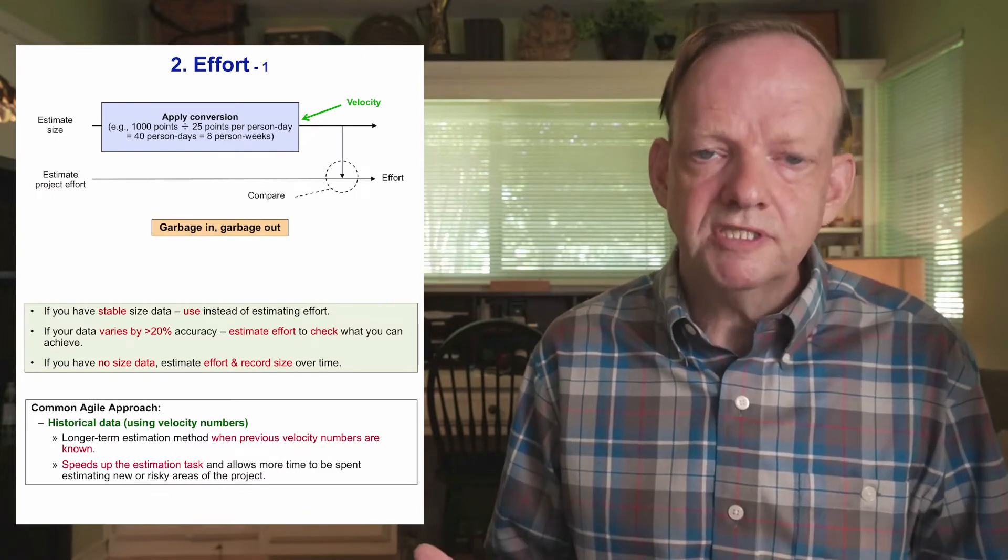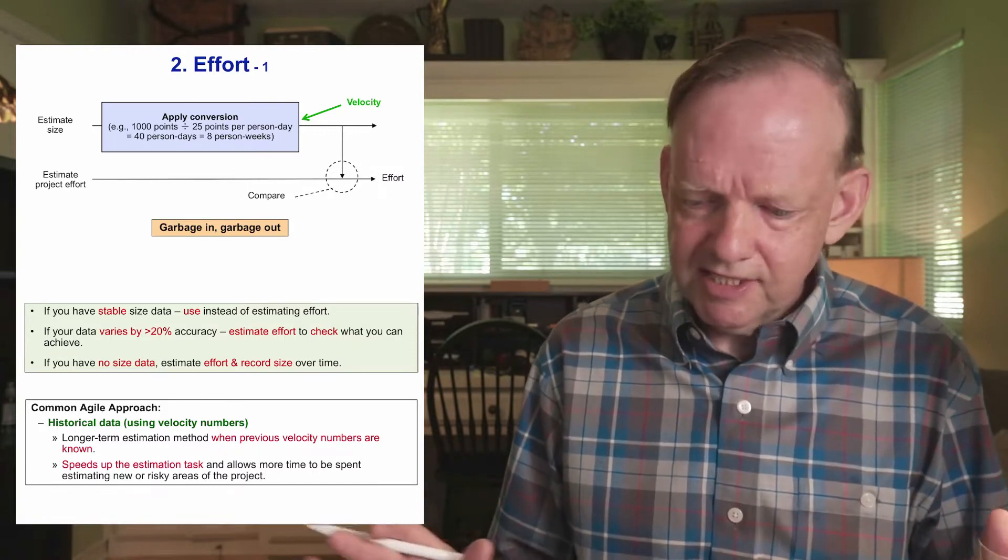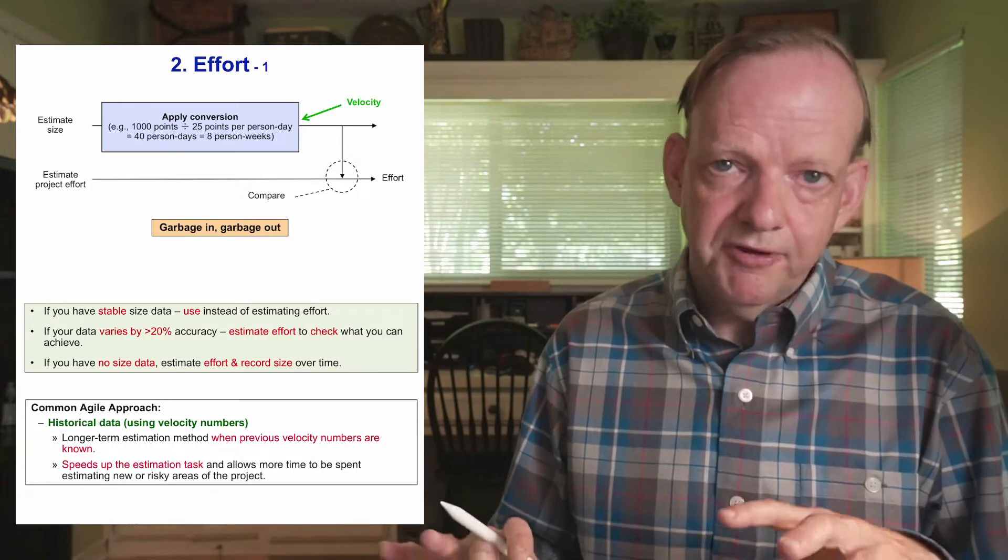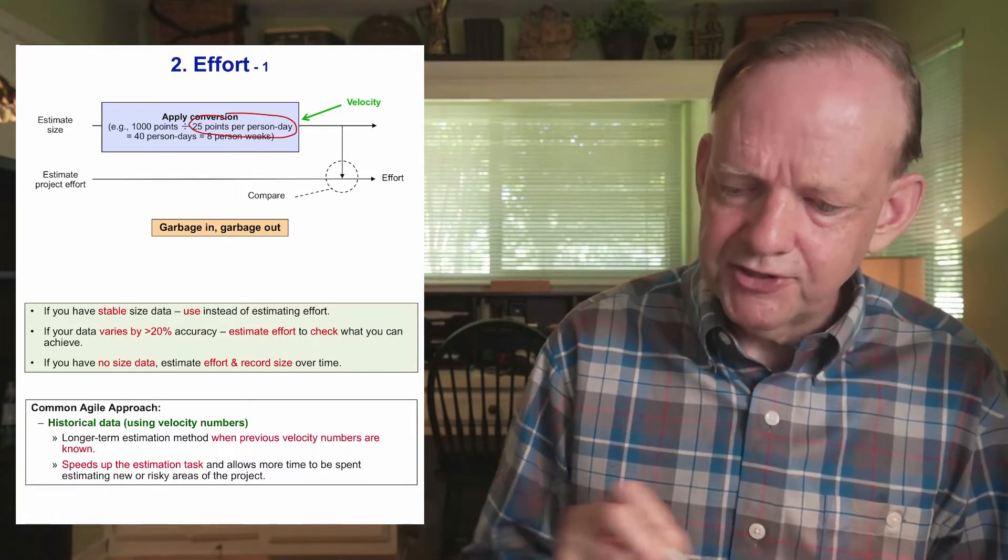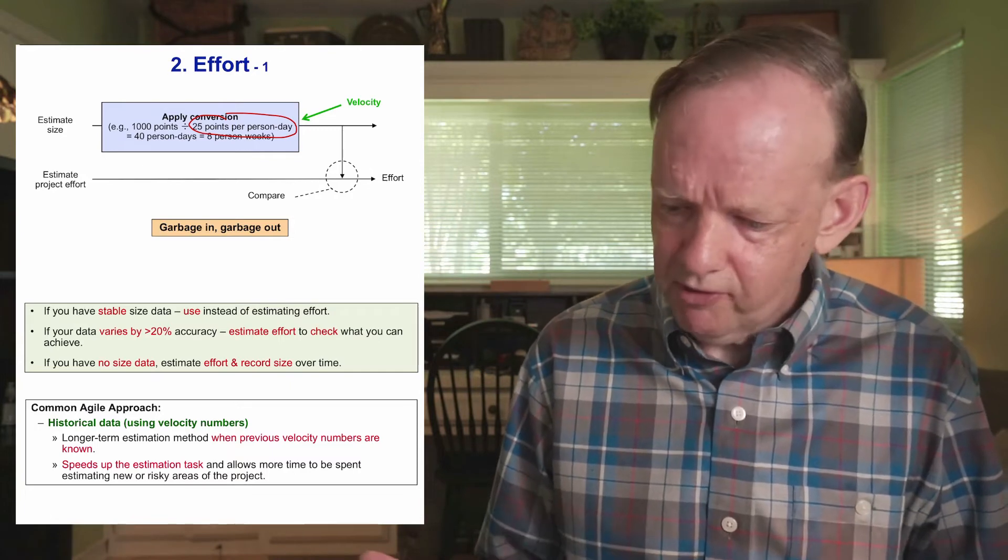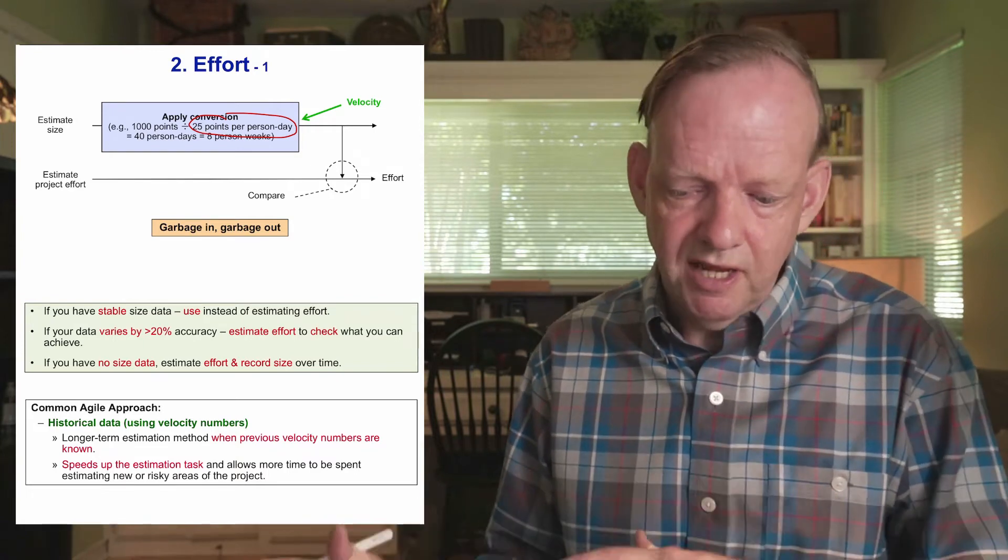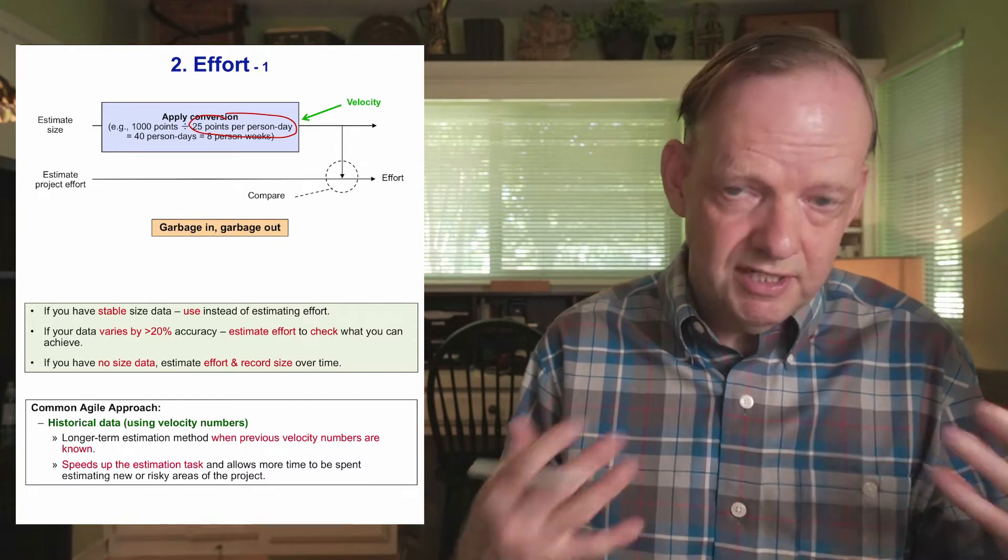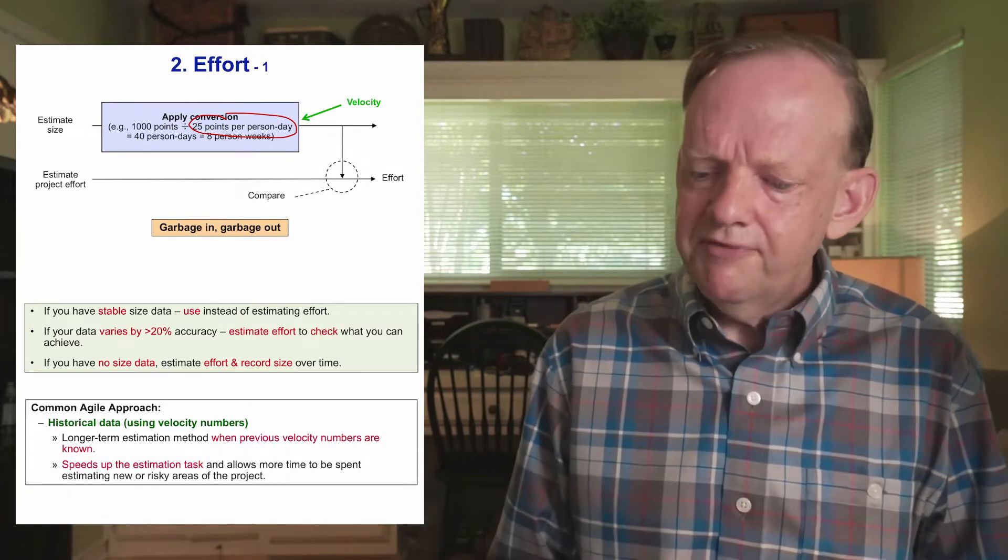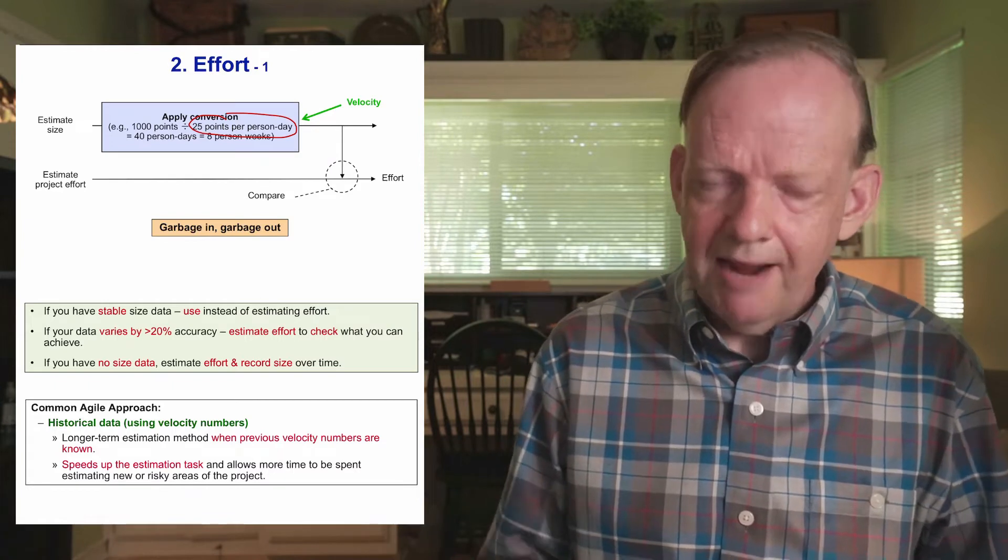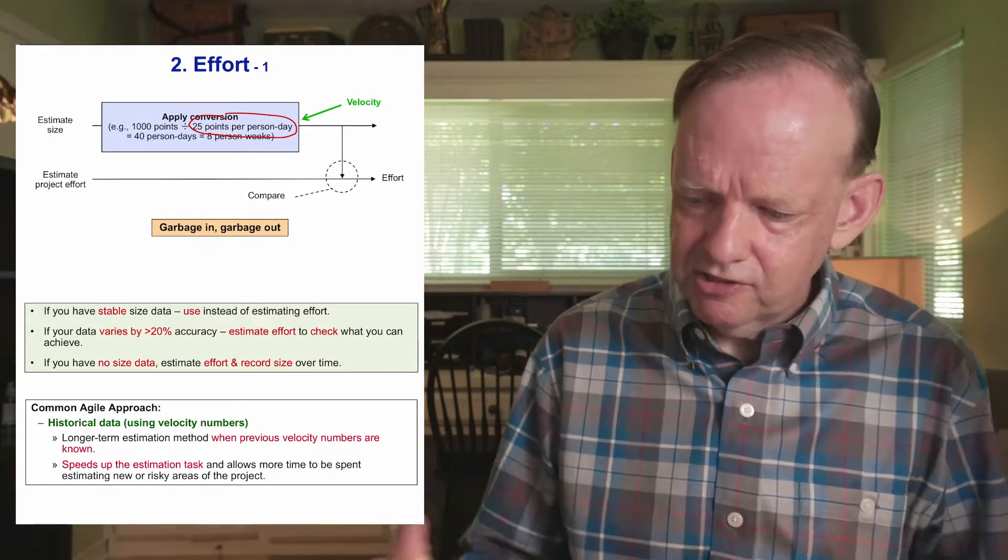The next step is to derive effort. Effort would mean billable hours or labor or uninterrupted effort or ideal time. The idea of starting with a Fibonacci series or story point series and then a velocity is you can take the velocity and figure out the likely duration. If we had a project or backlog of a thousand points and we knew that our team could do 25 points per person per day, then we can take that number using an average velocity and come up with a rough idea of person days and person weeks. If you have good velocity data, like how many points per week a team member can do, then you can do a quick calculation and get a quick prediction of the likely effort at the end.